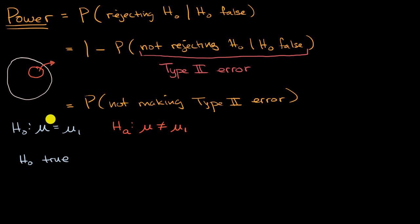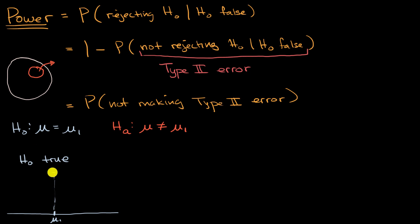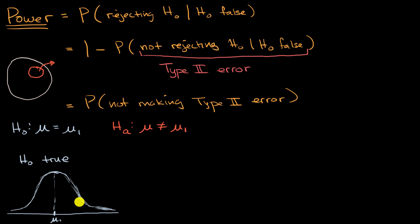In a world where you assume the null hypothesis is true, you might have a sampling distribution centered at mu one. Given your sample size, you get a certain sampling distribution for the sample means — if sample size increases, this will be narrower; if it decreases, it will be wider. You set a significance level, which is essentially your probability of rejecting the null hypothesis even if it is true. You can view your significance level as the probability of making a type one error.